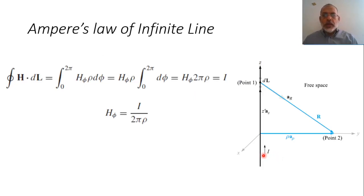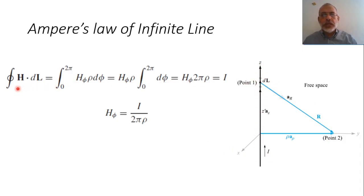We can apply Ampere's law for the same problem of an infinite current line. So, if we have an infinite current line and we are assuming that we have a magnetic field in the phi direction, we are going to integrate this magnetic field in the phi direction on a closed circular path around this infinite line. In this case, the magnetic field we are interested in is the magnetic field in the phi direction.